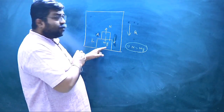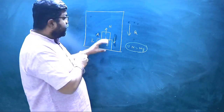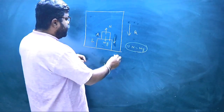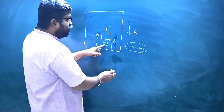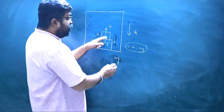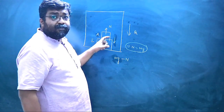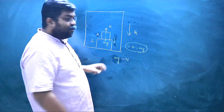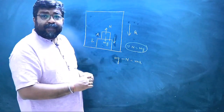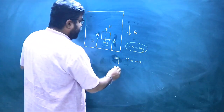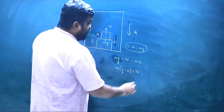The system is accelerating downward, so we consider the effective weight. The normal reaction N equals Mg minus MA, because the elevator is descending with acceleration A, reducing the contact force between the blocks.